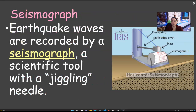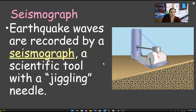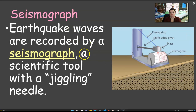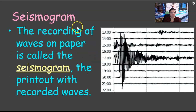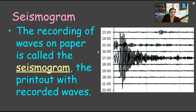We're going to flip back to the notes. So — seismograph. Earthquake waves are recorded by a seismograph, a scientific tool with a jiggling needle. It's actually a seismogram, not a graph. The graph is what you make. So these are flip-flopped in the notes — please make a note. The recording of the waves on paper is called a seismogram; that's the seismograph. The printout with recorded waves — you can see it's a graph. The gram is the machine.